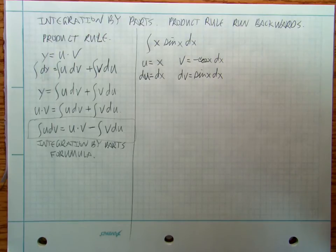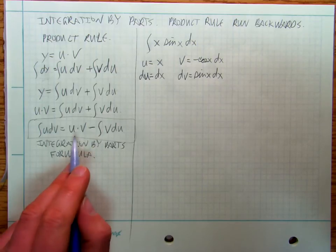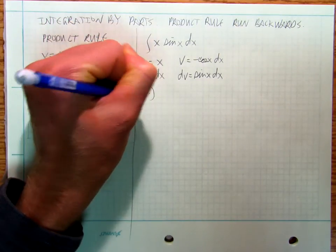The antiderivative of sin x dx is going to be negative cosine x. And then I use my little integration by parts formula.